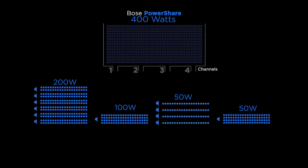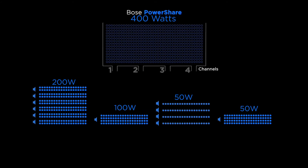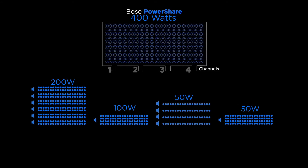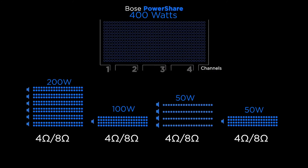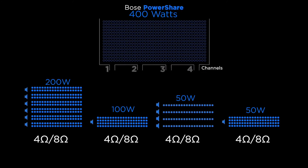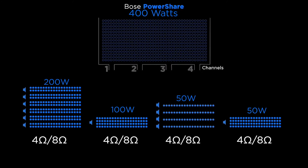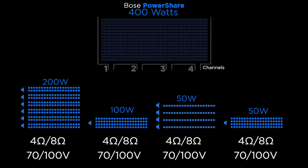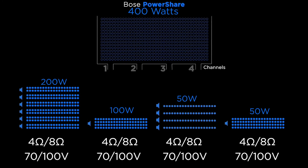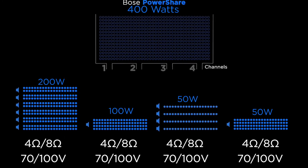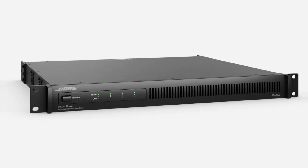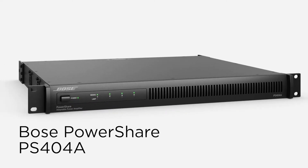PowerShare is an adaptive combination amplifier. Each channel can be configured for low impedance — four or eight ohm use — or high impedance, 70-volt or 100-volt applications, without bridging, using jumpers or software settings.